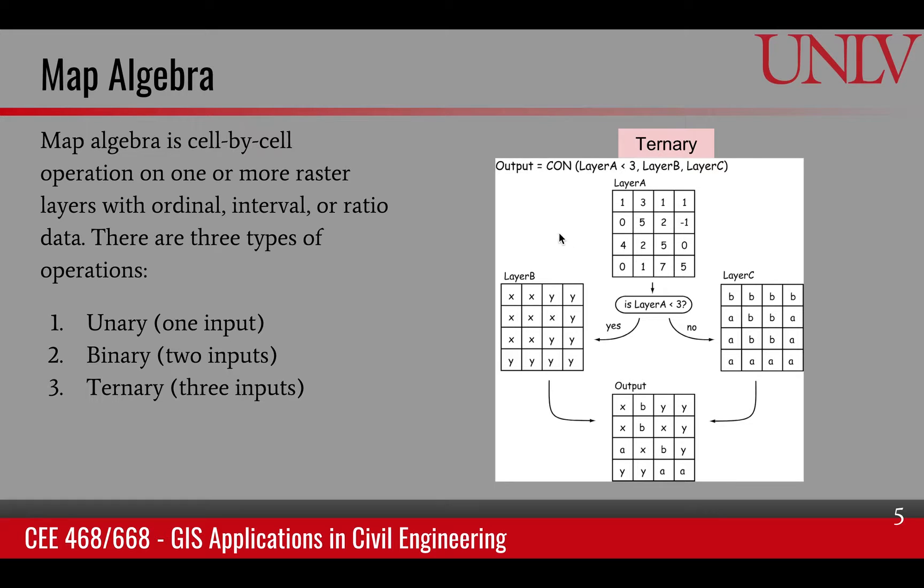Let's look at the first value, first pixel of layer A. 1 is less than 3, so that is true. The output will be from layer B, which means x. The second one: 3 is less than 3, that is not true. 3 is equal to 3, so this is false. We'll choose something from C, so the second pixel will be 2, chosen from C.